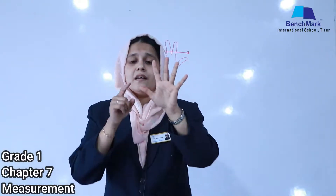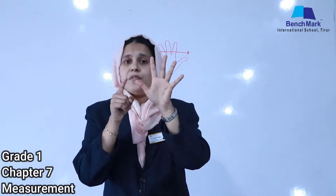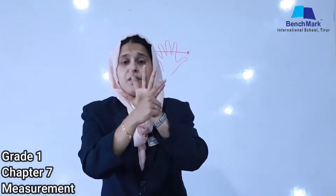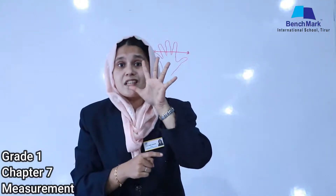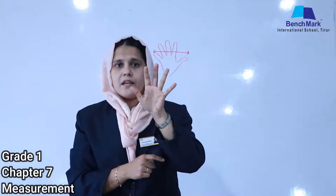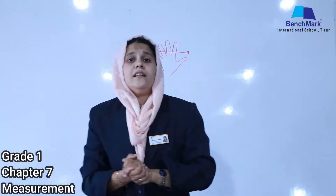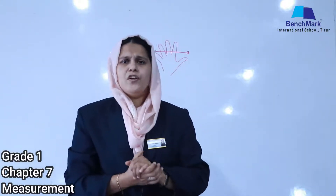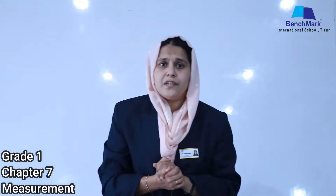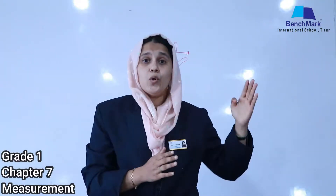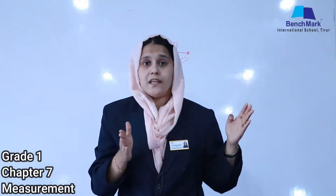Hand span is the distance from the tip of the thumb to the tip of the little finger of a stretched hand. The next unit is feet. What do we mean by feet? Feet is the distance from the toe to the heel.